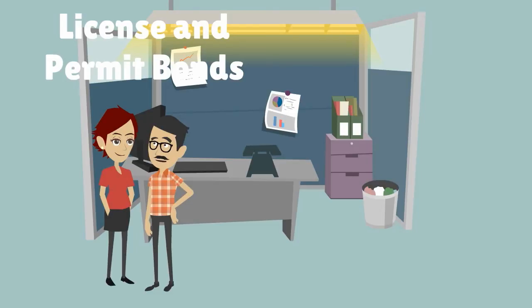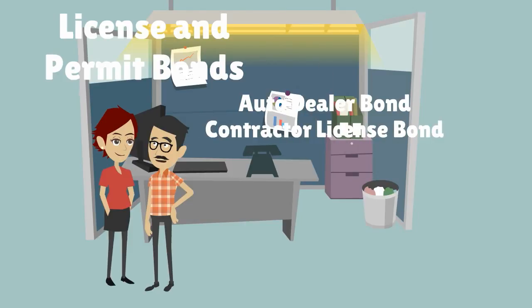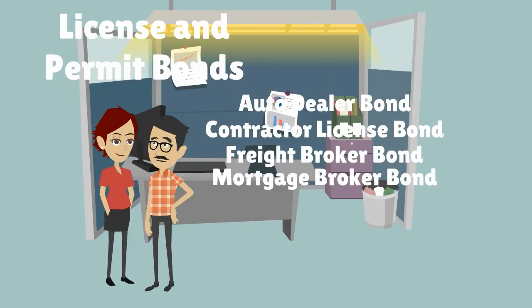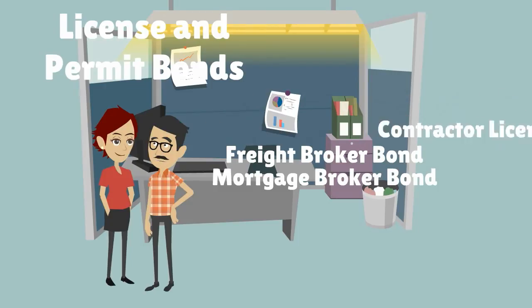There are a number of license and permit bonds such as auto dealer bonds, contractor license bonds, freight broker bonds, mortgage broker bonds, and many more. For example, auto dealer bonds are required by state's department of motor vehicles and every state has their own bond requirements.